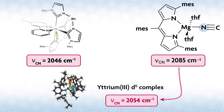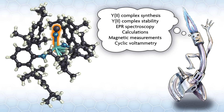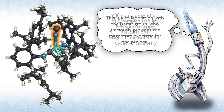Obviously, there are far more details in the full paper, which came out in 2023, including synthesis of the yttrium-2 complex and its stability, EPR spectroscopy, calculations, magnetic measurements, and cyclic voltammetry. These compounds were prepared to work out the synthesis before attempting similar lanthanide chemistry where we hope to make molecular magnets. Actually, we've already made them, but the papers aren't published yet. This is a collaboration with the Dimera group, who graciously provides the magnetism expertise for the project.